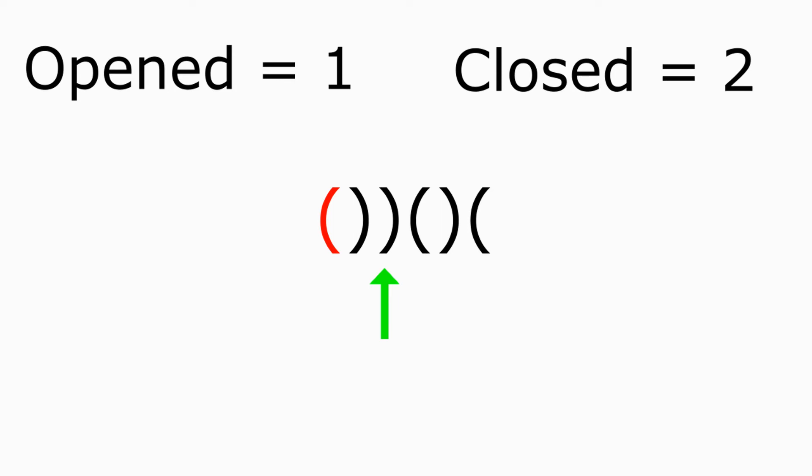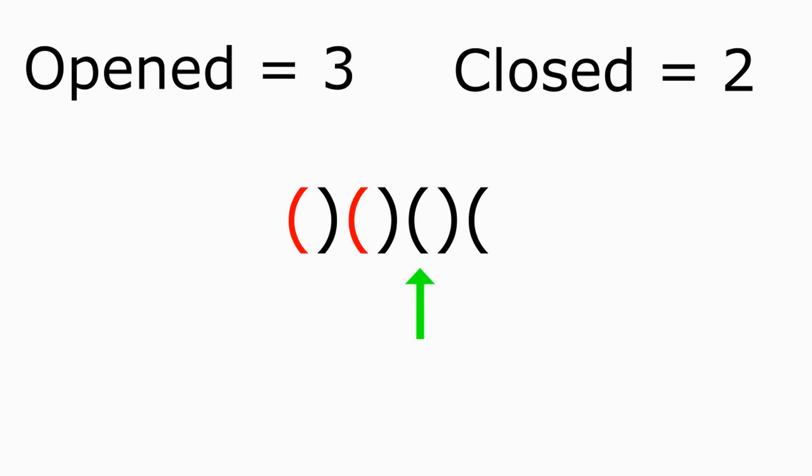Going to the next character, the number of closed parentheses is two while we only have one open — again closed are outnumbering open, so we insert an additional open parenthesis before. Now it's two-two, equal. Next we have three open and two closed, but that's okay because we can always close the parentheses later. We don't need to worry about that yet.